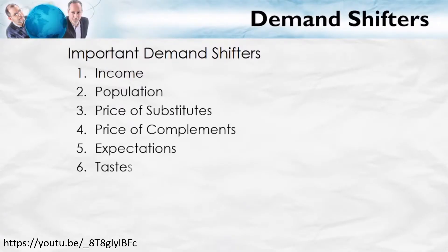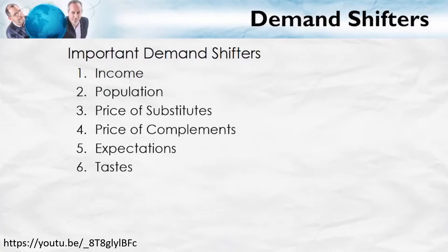Here are some examples of important demand shifters: changes in income and changes in population. An increase in income might cause people to be willing to pay more for a given quantity of a good, or might cause them to want more of that good at a particular price. More people might increase the quantity demanded at a particular price because there are more potential customers. Fewer people in the world could decrease the quantity demanded.